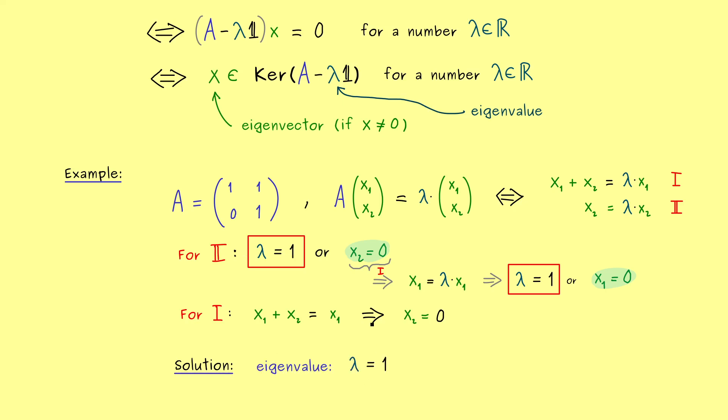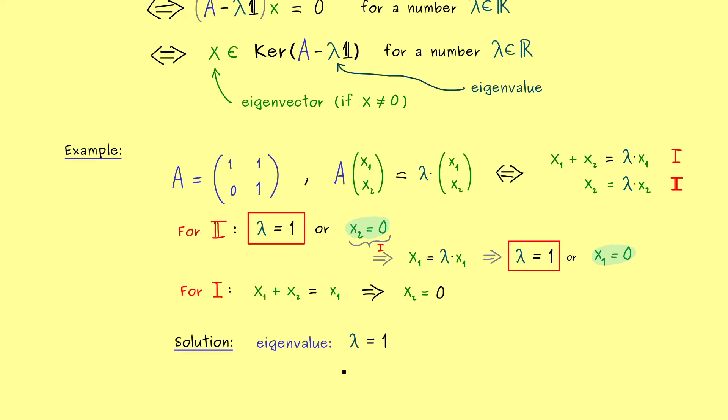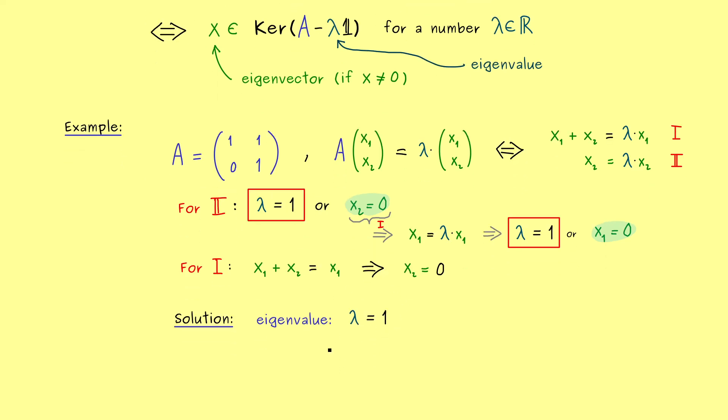And with that, we can write down our whole solution of this eigenvalue equation. First, we have proven that this matrix A only has one eigenvalue, and this one is given by the scaling factor 1. Moreover, the corresponding eigenvectors can be written as x_1, 0. And there, x_1 can be any real number, but not 0. So again, you know, we always have to exclude the zero vector from the eigenvectors.